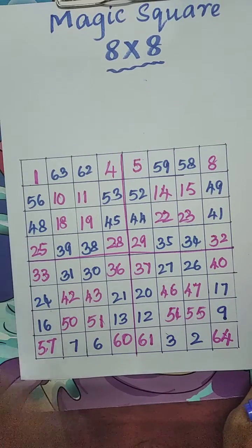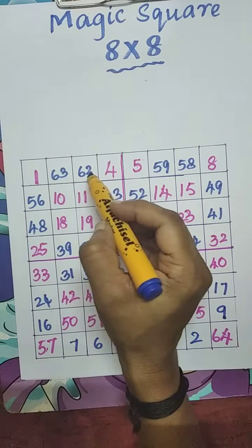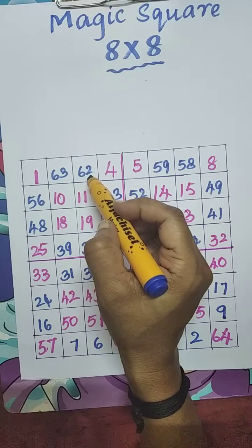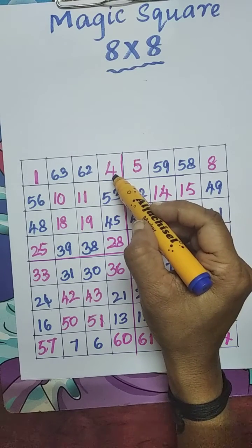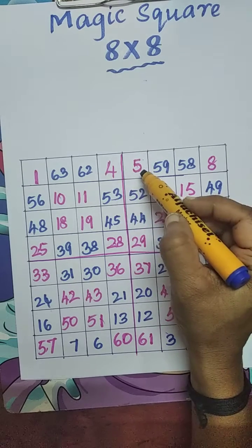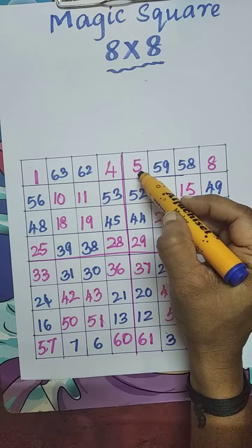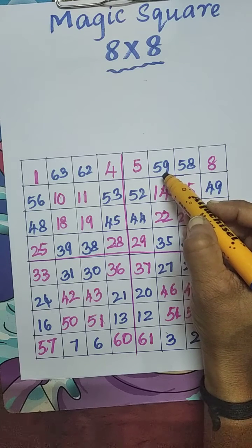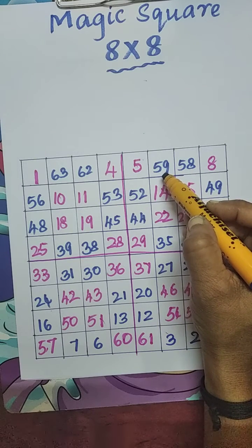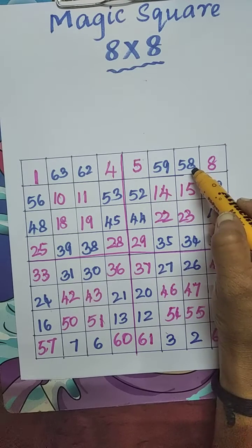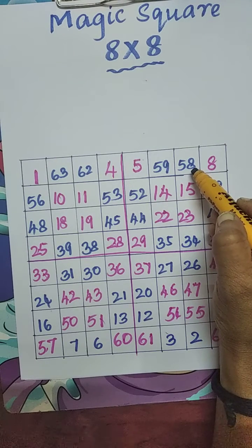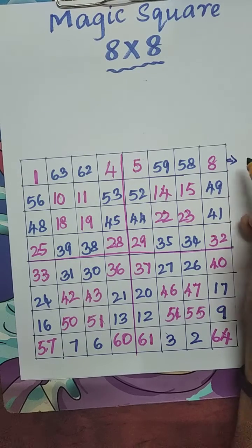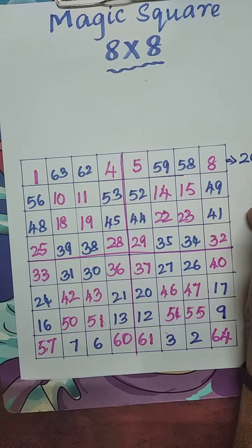Start from here. 1 plus 63, that is 64. 64 plus 62, that is 126. 126 plus 4, 130. 130 plus 5, 135. 135 plus 59, 194. 194 plus 58, 252. 252 plus 8, that is 260.